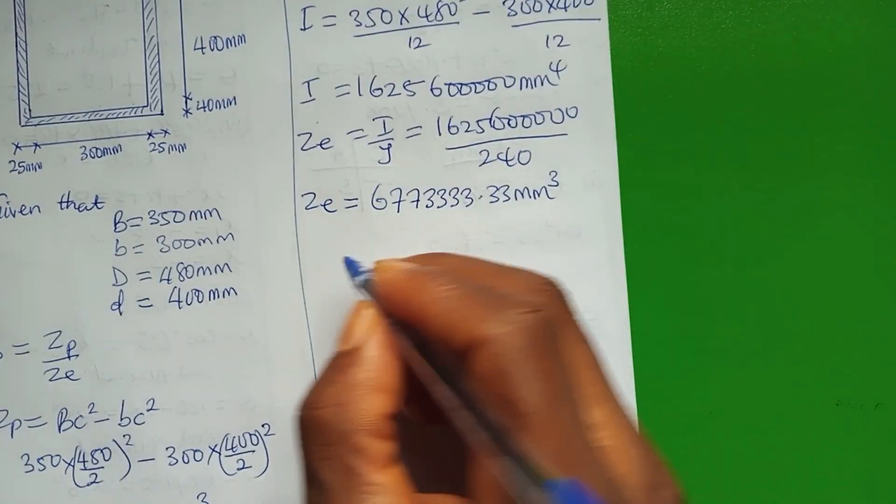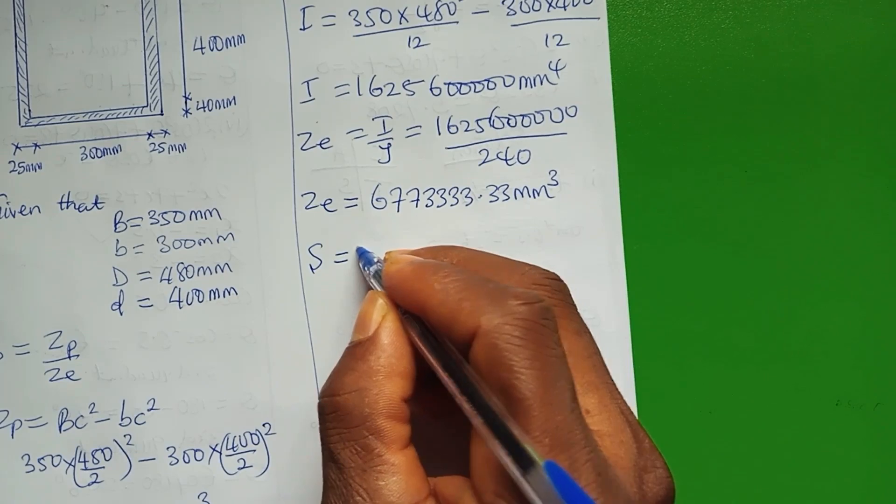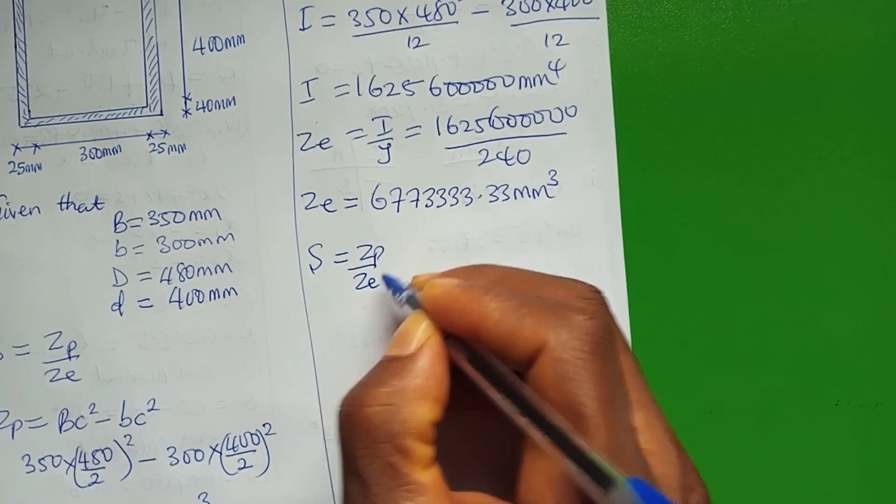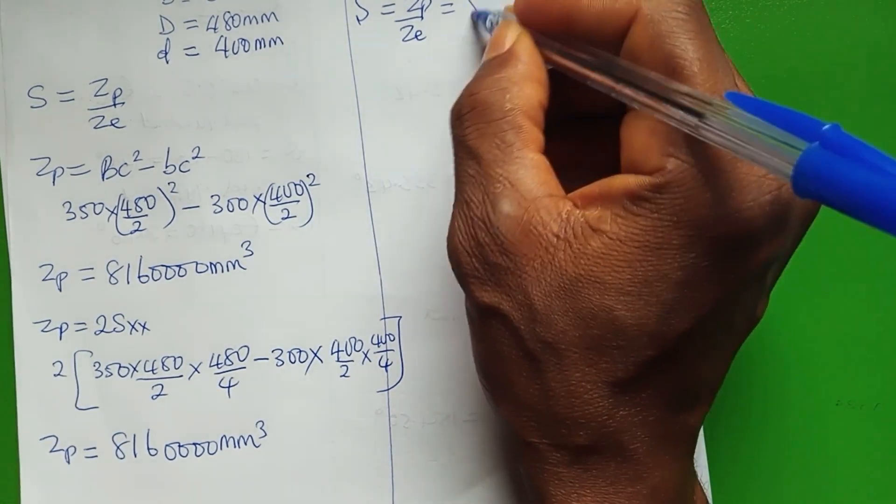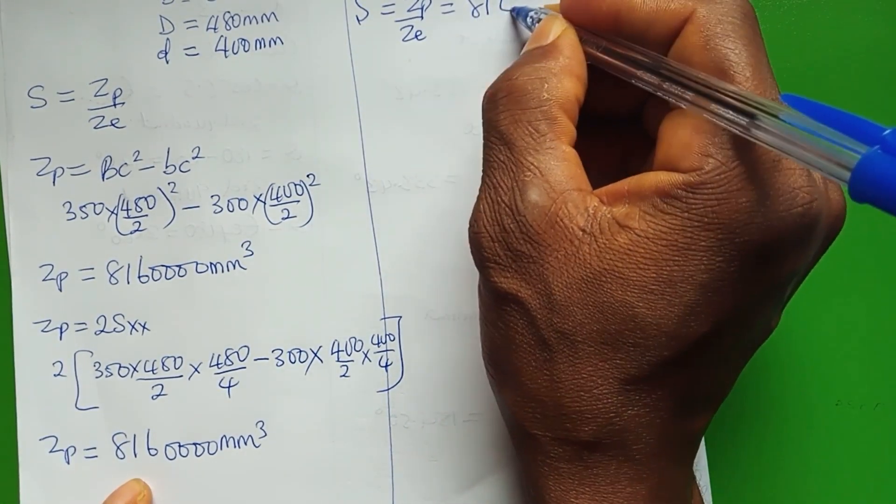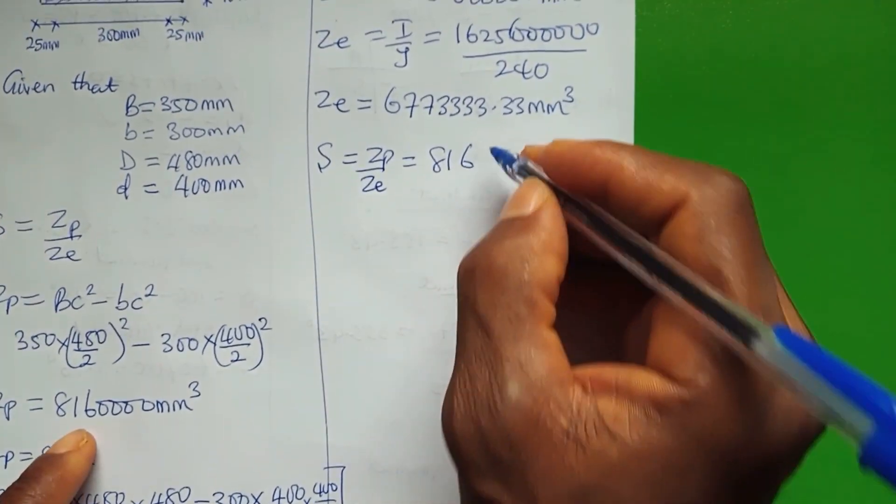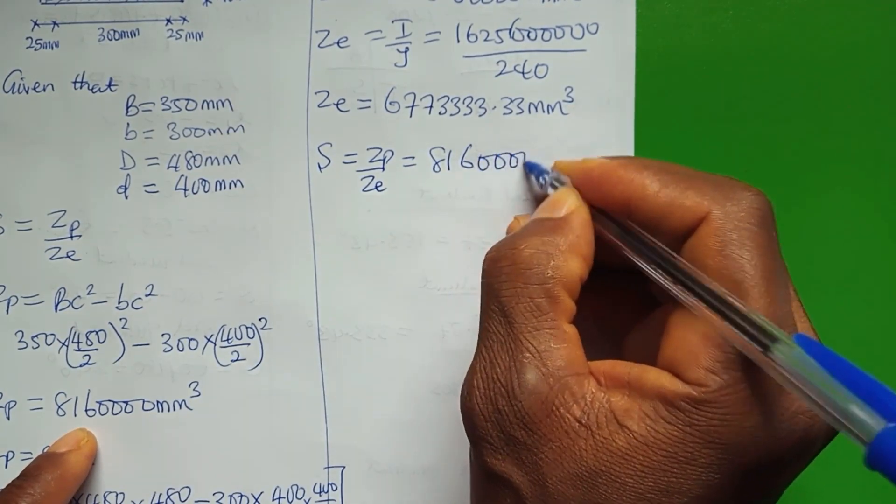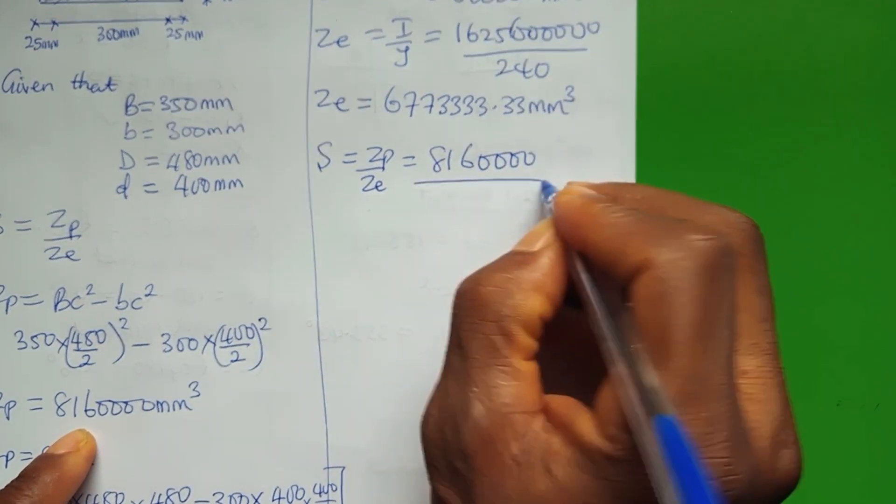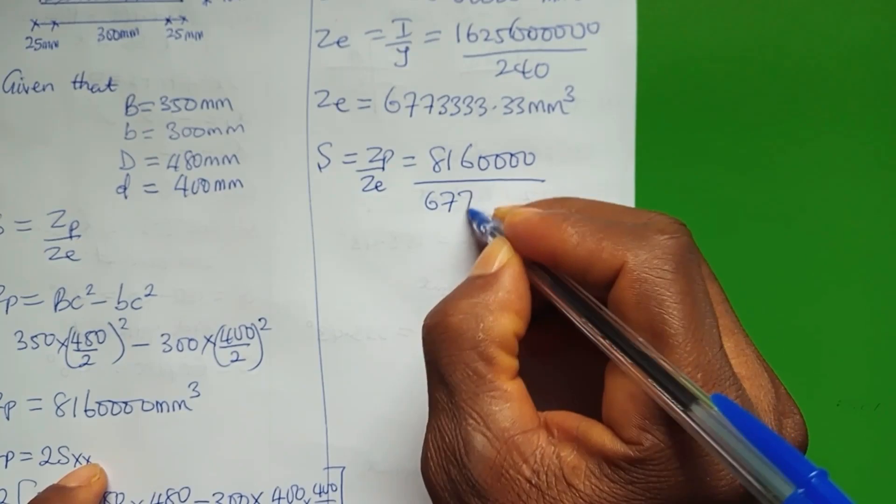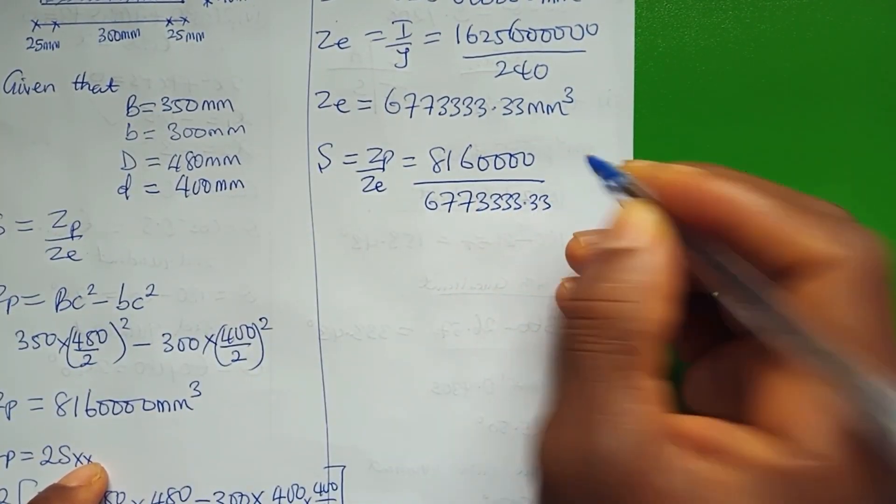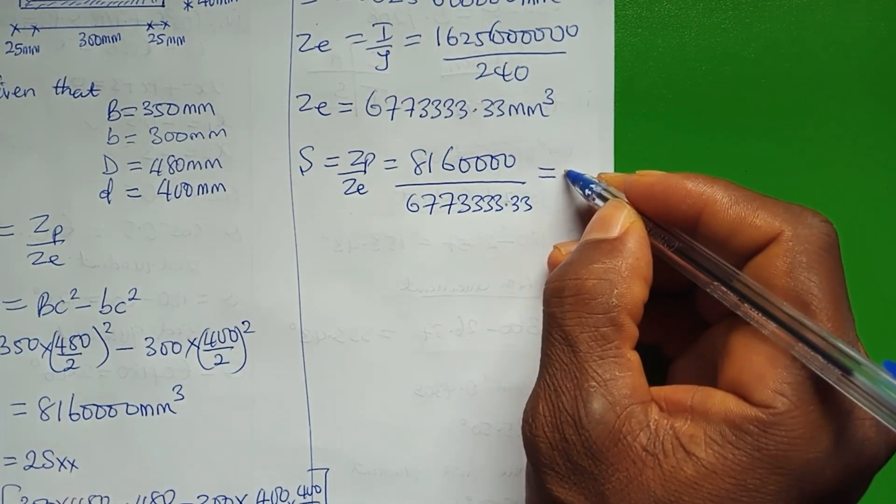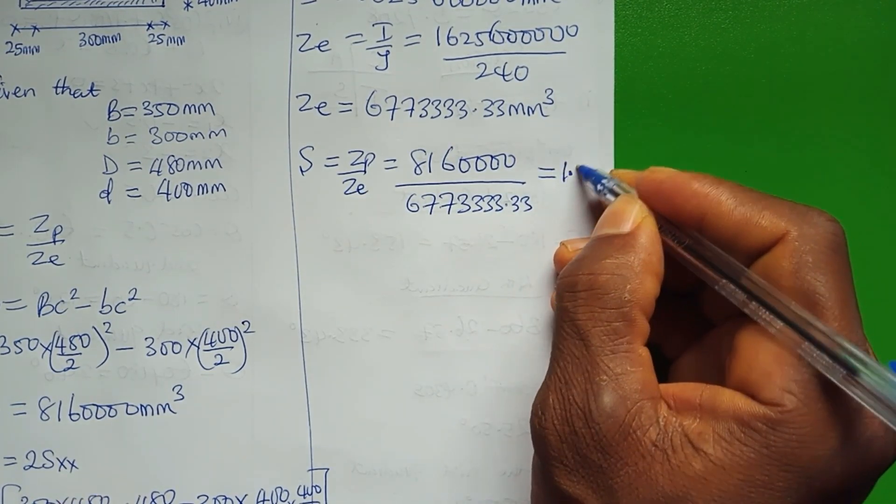Therefore, our shape factor is equal to Zp over Ze, which is equal to 8,160,000 over 6,773,333.33. If we divide this, we have that our shape factor is equal to 1.2.